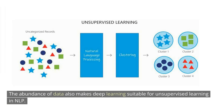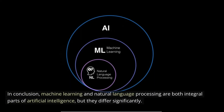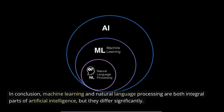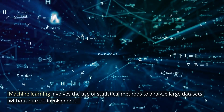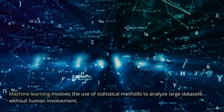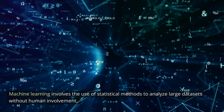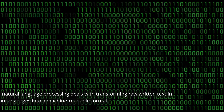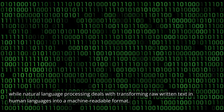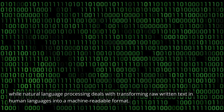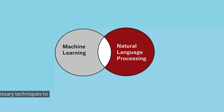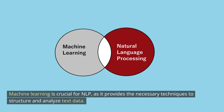The abundance of data also makes deep learning suitable for unsupervised learning in NLP. In conclusion, machine learning and natural language processing are both integral parts of artificial intelligence, but they differ significantly. Machine learning involves the use of statistical methods to analyze large datasets without human involvement, while natural language processing deals with transforming raw written text in human languages into a machine-readable format.